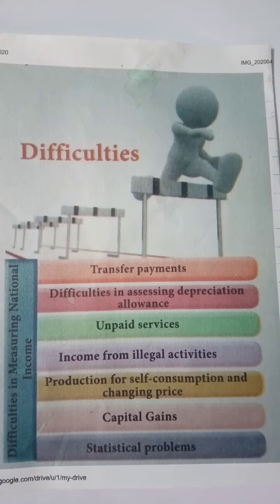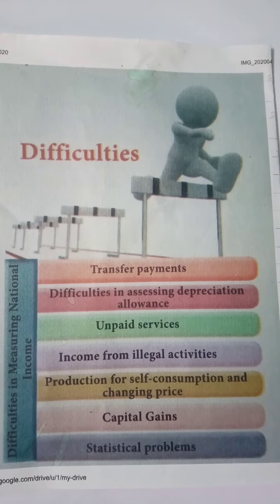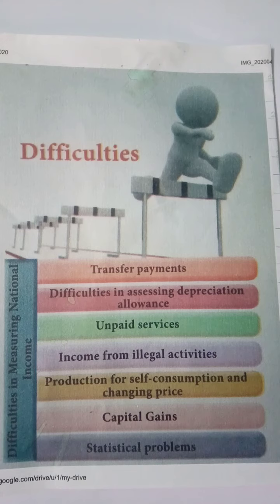The next is capital gains. Capital gains or loss to the property owner is excluded from national income. For example, if capital assets such as houses and other properties are sold at a higher price than the price existing in the market.